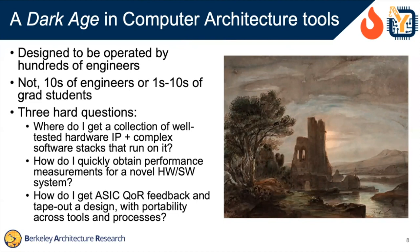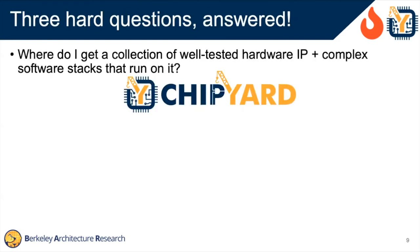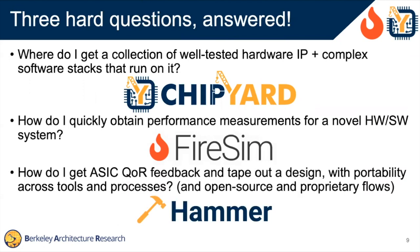We need some way to run it fast. And of course, we would like to make sure the design we're building is realistic, so we'd like to at least get ASIC QoR feedback — things like area and frequency — and then maybe also tape it out, with portability across different back-end tools and processes. I'll argue that what we're going to show you today answers these three hard questions. Where do you get well-tested hardware IP and the software that goes with it? That's going to be ChipYard. How do we quickly get performance measurements? That's FireSim. And how do we get ASIC QoR results quickly in an agile way? That's going to be Hammer.